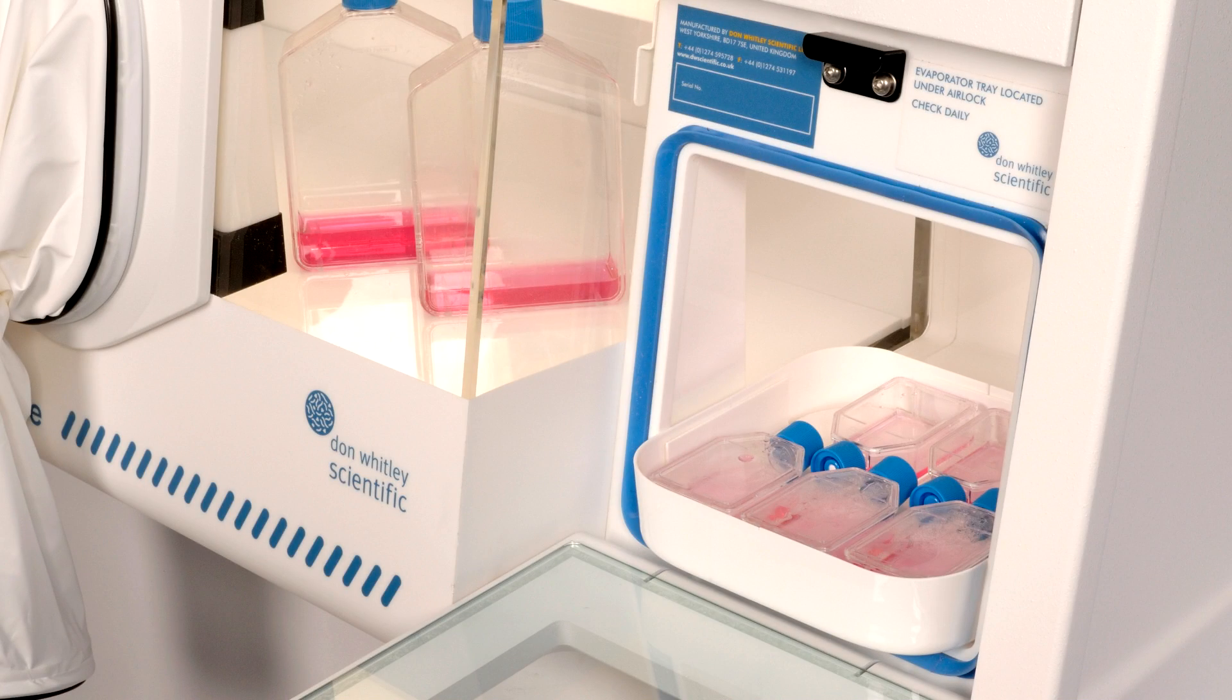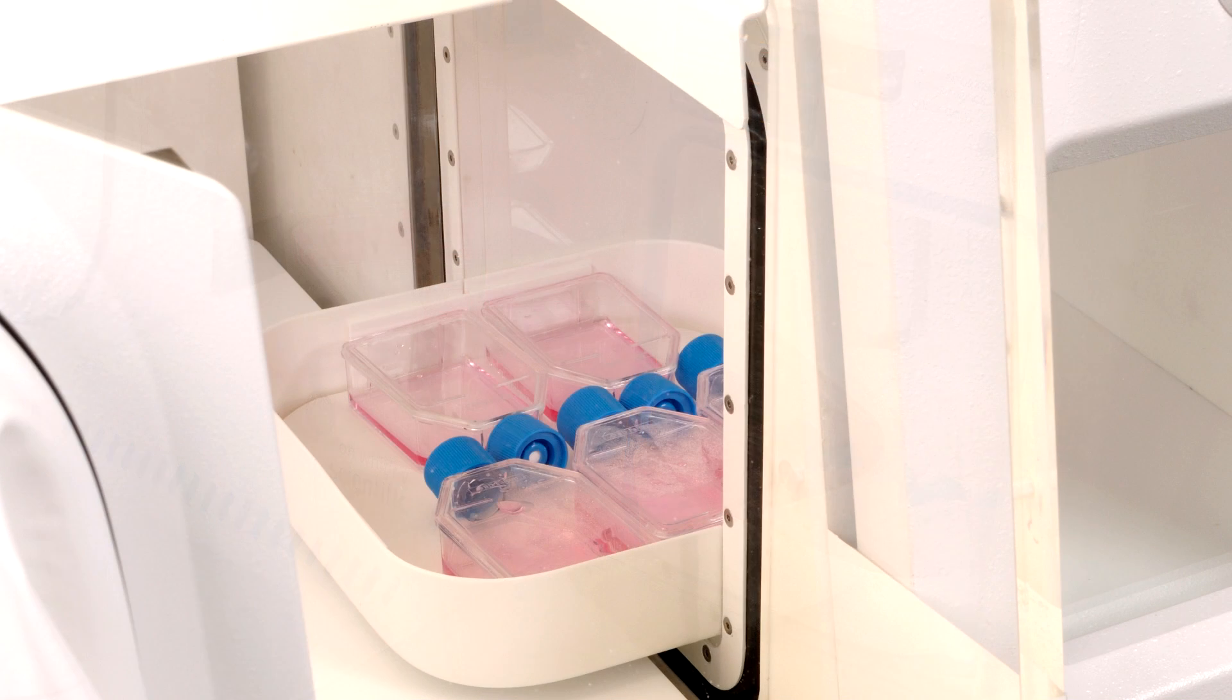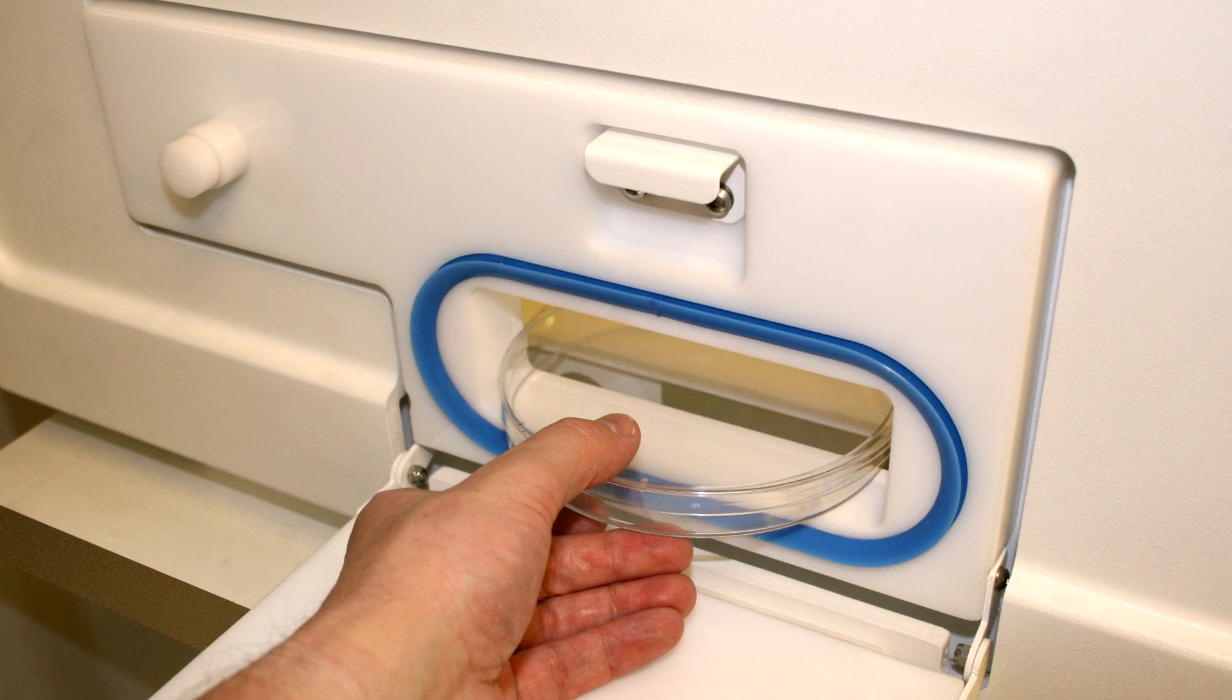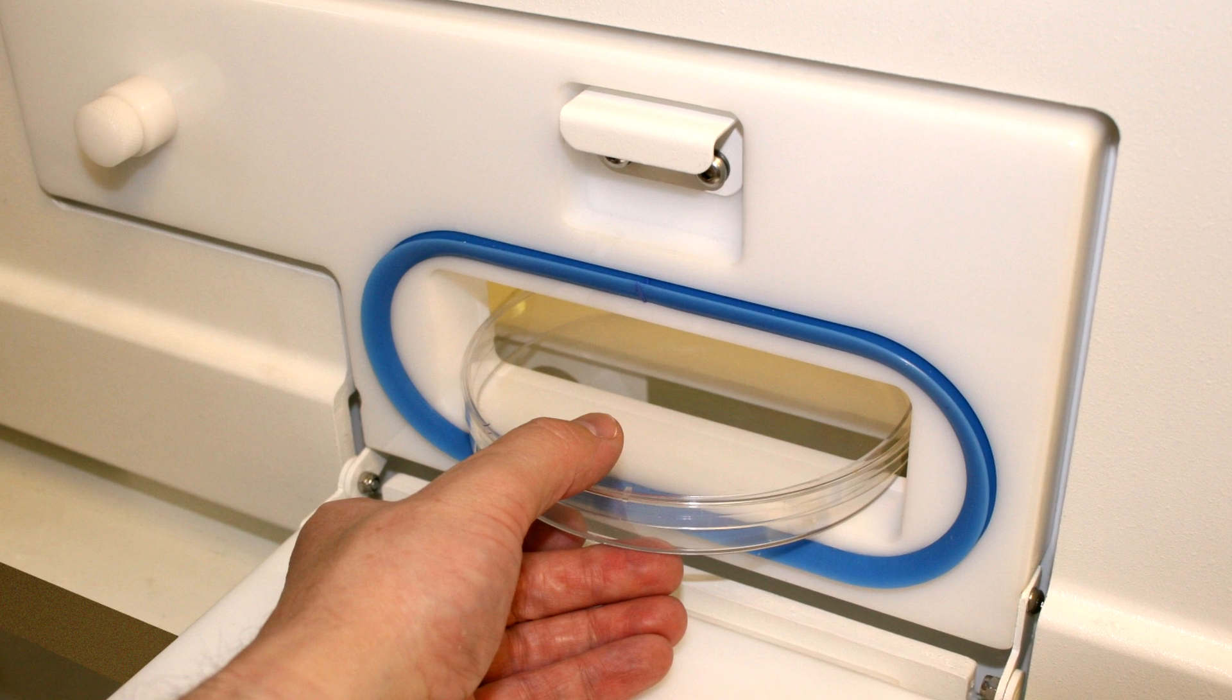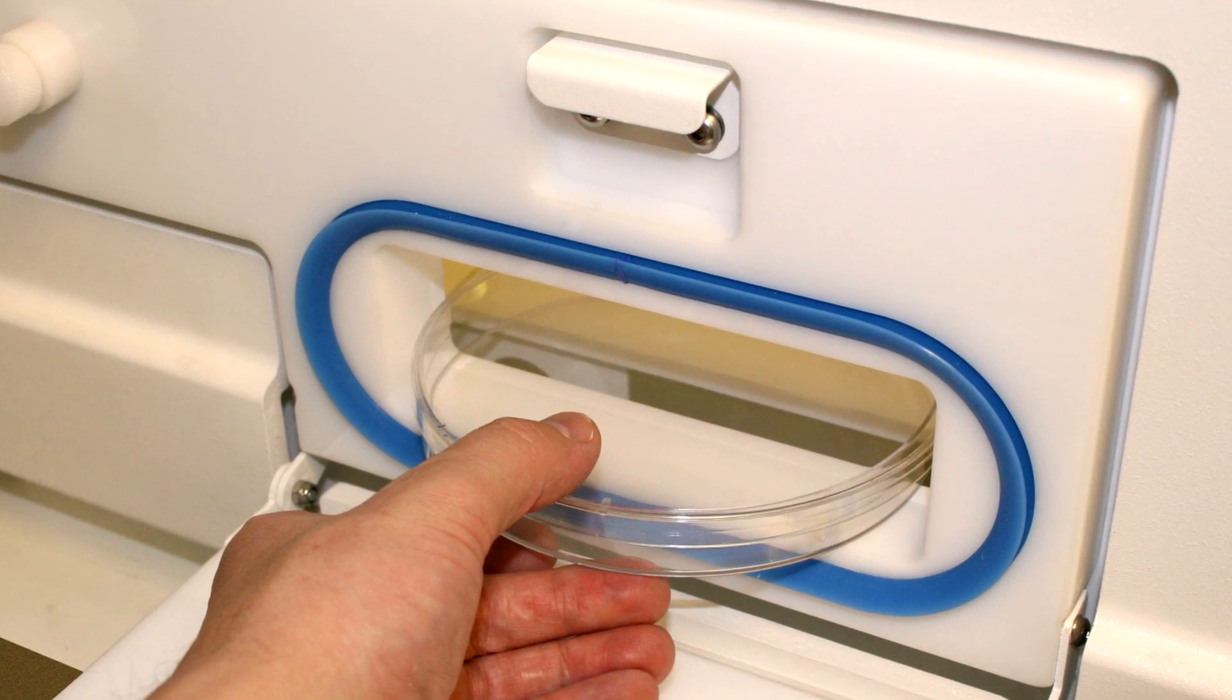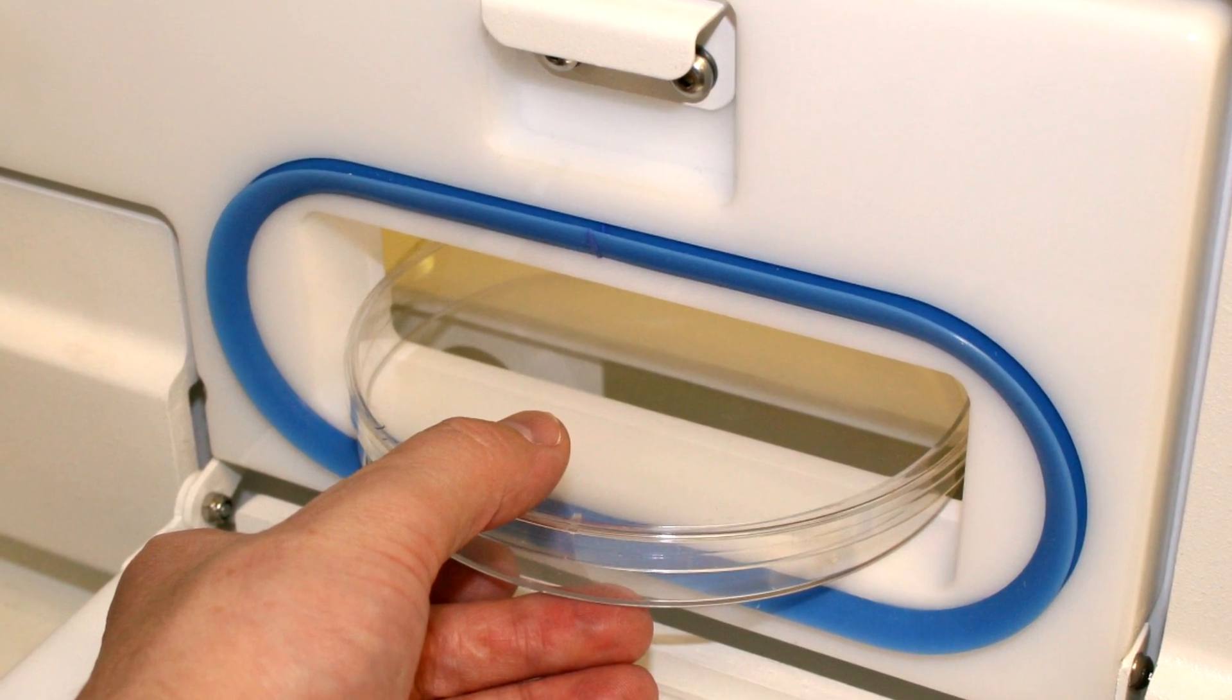Every A35 is equipped with a transfer airlock to introduce samples or equipment. The 12 liter rapid cycle airlock has the capacity to introduce up to 40 petri dishes in 60 seconds. There is also the option to specify the 15 centimeter letter box, ideal for quickly transferring all sizes of dishes and small items.